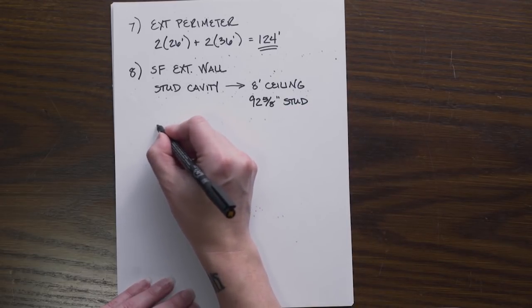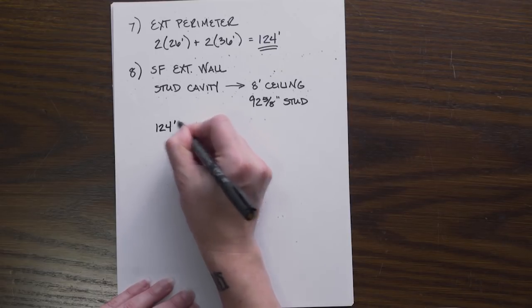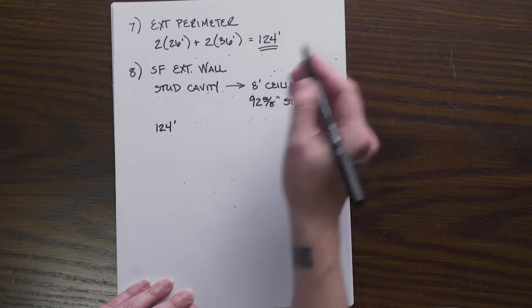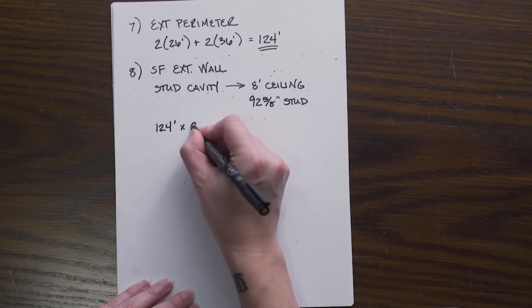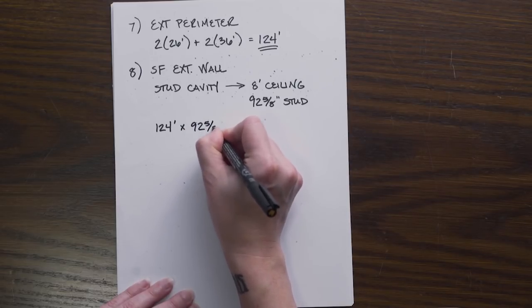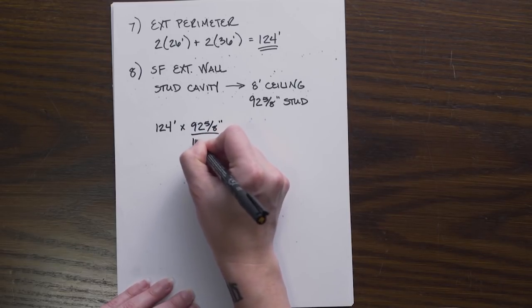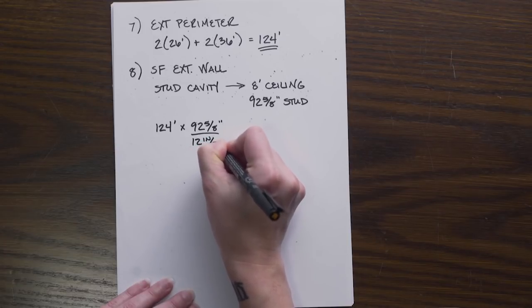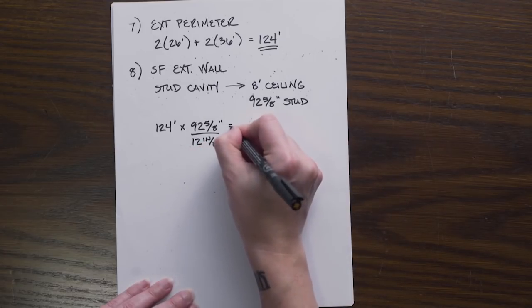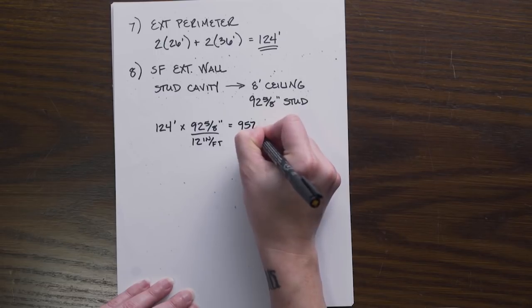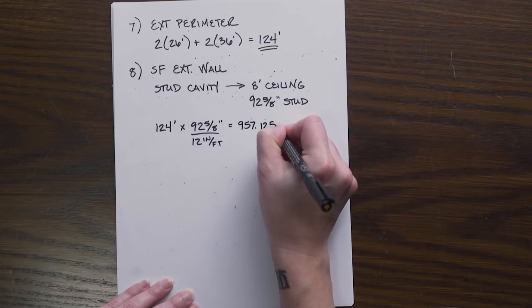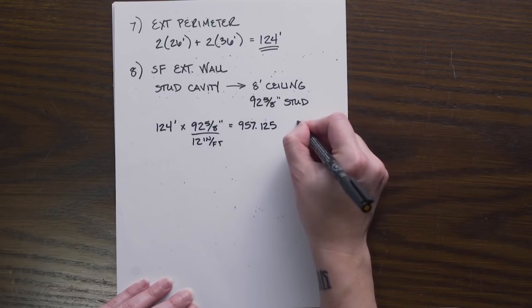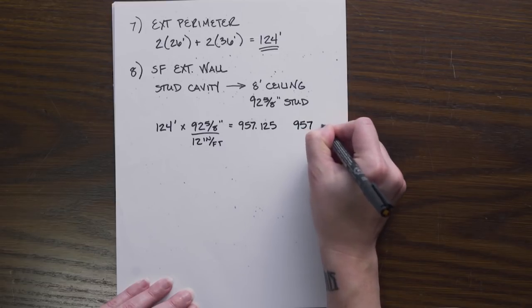We can take our 124 foot perimeter that we just calculated and we can multiply that by our 92 5/8 inch converted into feet: 957.125, roughly 957 square feet.